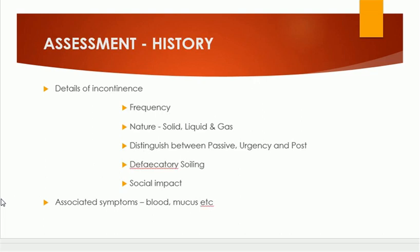When assessing patients of fecal incontinence, we need a detailed history of incontinence: the frequency, the nature — whether for solid, liquid, or gas — and we must distinguish between passive, urgent, and post-defecatory types of incontinence. We also enquire about defecatory soiling and the social impact of the incontinence on the patient.